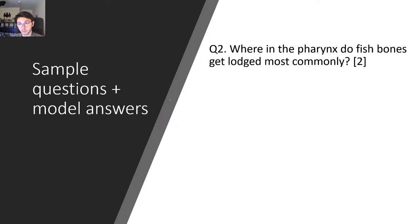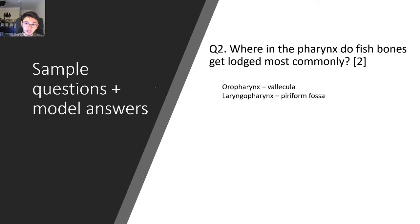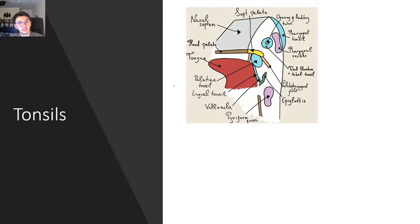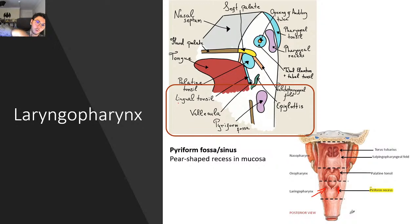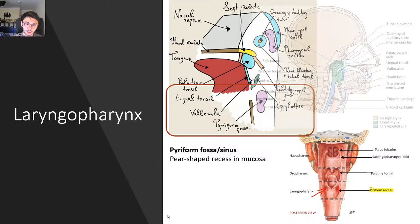Next question: where in the pharynx do fish bones get lodged most commonly? In the oropharynx, you have the vallecula, and in the laryngopharynx you have the piriform fossa — those are the two places where fish bones most commonly get lodged. A bone can get stuck in the vallecula or in the piriform fossa. If stuck in the vallecula, you can often cough it up or even retrieve it yourself. But if it's in the piriform recess, you need to go to A&E where they use large instruments to reach all the way down and remove it — much more challenging.